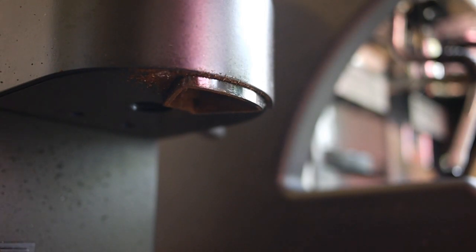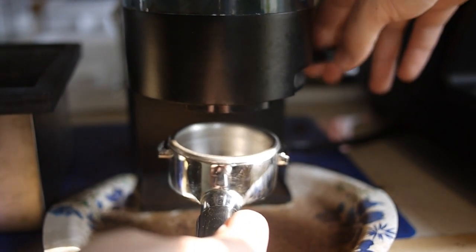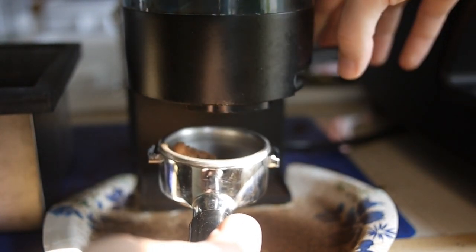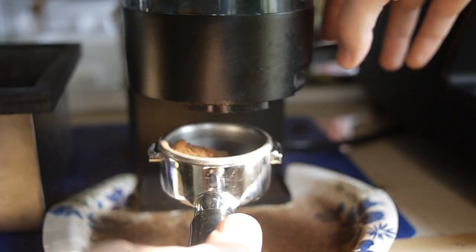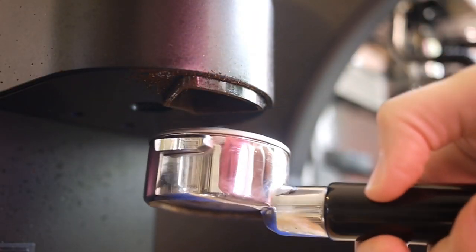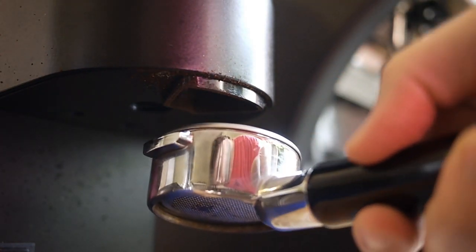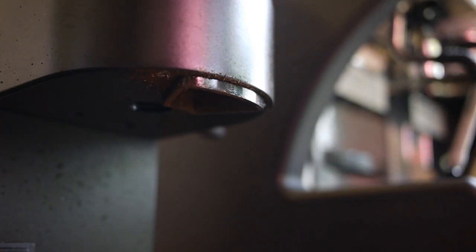You'll also notice that I have removed the portafilter holder. It's terrible. Since the doser chute isn't very long, the grinds will just get pushed to the left as you thwack them out, and the only way to compensate for this is to move the portafilter around, which you can't do when the holder is in place. Two screws and it's gone, baby, gone. And good riddance. The grinder is easier to use and more enjoyable without it.